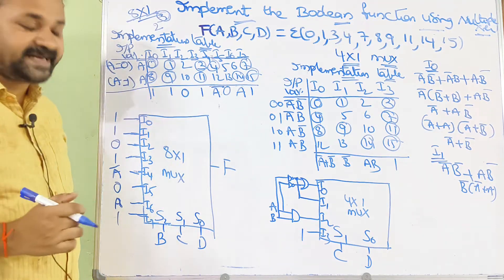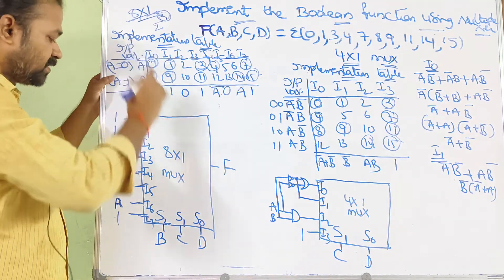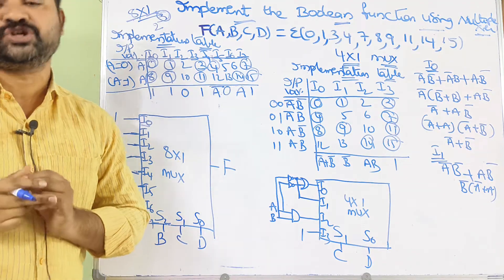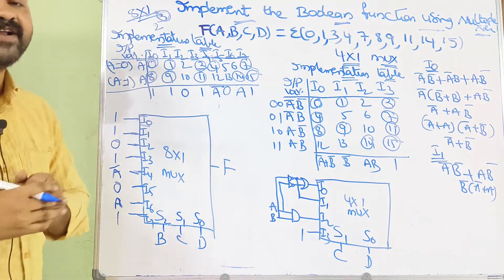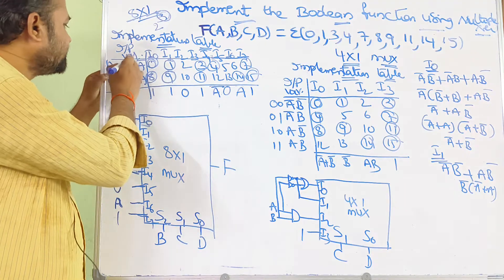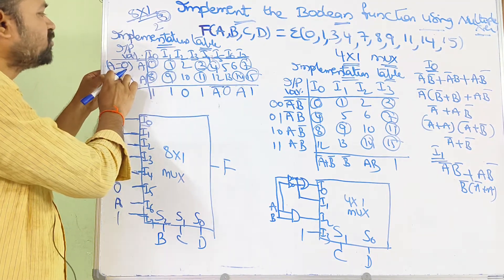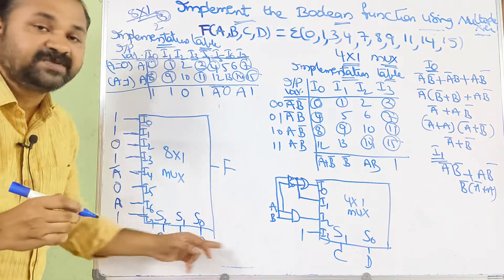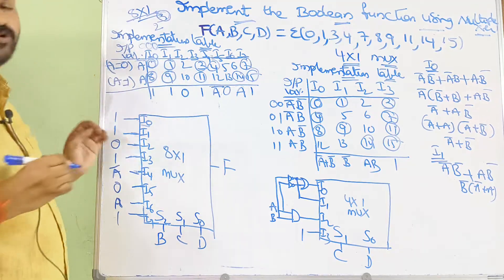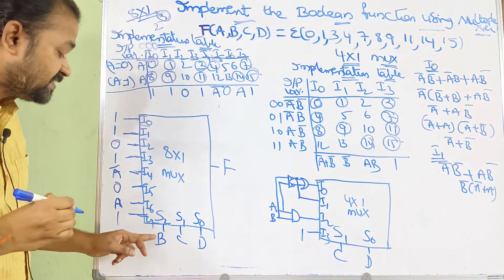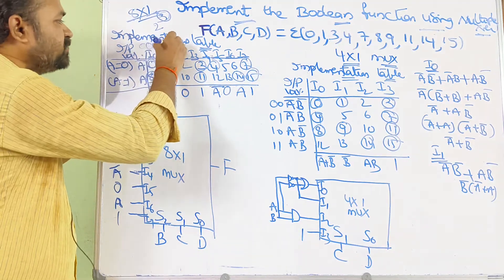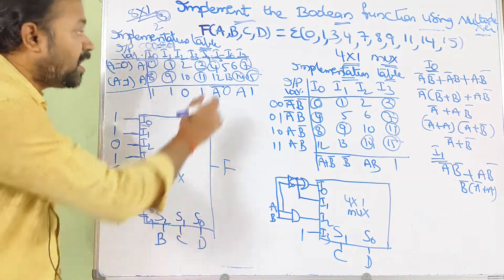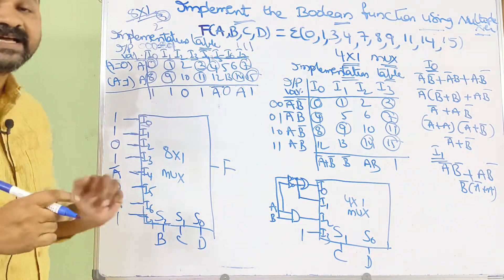Input i0 is selected when selection inputs s2, s1, s0 are all 0 (000). Input i1 is selected when selection inputs are 001. Likewise, i7 is selected when the selection inputs are all 1s (111). So when a=0 and bcd=000, the decimal value is 0; when a=0 and bcd=001, the decimal value is 1, and so on up to i7.